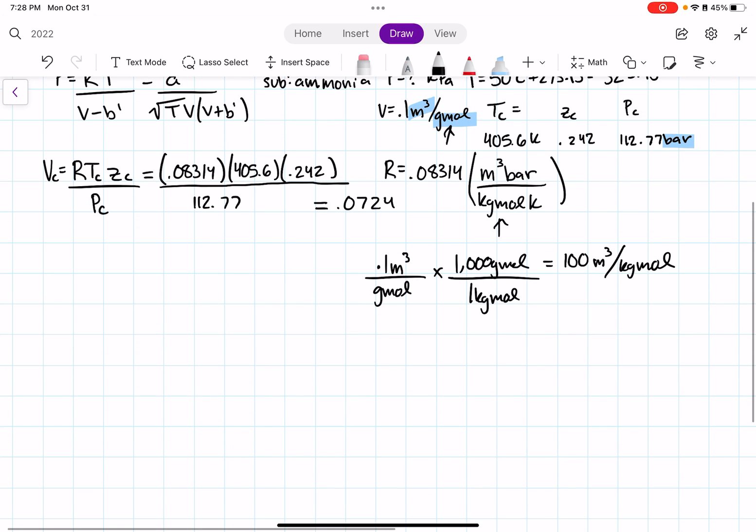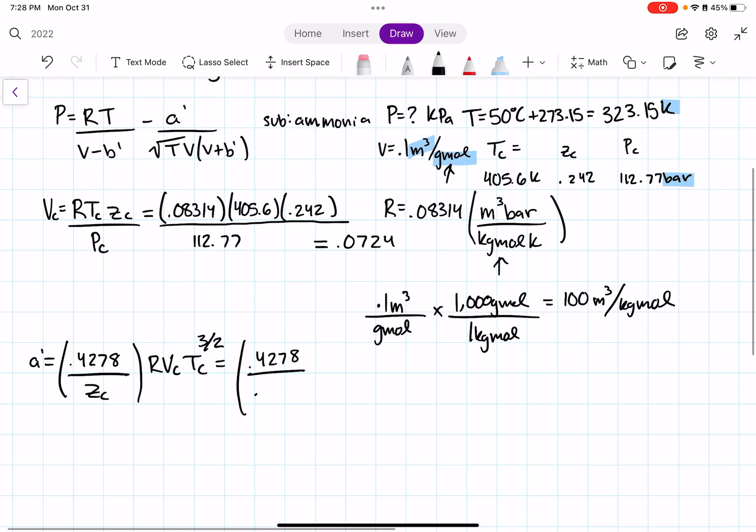Now let's go ahead, now that we have VC, we can calculate A prime. I'm going to go ahead and calculate A prime over here. A prime, the formula, is this one. And now we just plug things in again. So honestly, just setting it up at the beginning is probably the hardest part about this problem, because you have to make sure that your units match your R value. But as long as you do that, these problems should not be that bad. Now I'm just plugging numbers in. My VC is 0.0724, and then my critical temperature is 405.6 Kelvin, and that's raised to 3 over 2. And when you plug that into your calculator, you're supposed to get 86.9202.